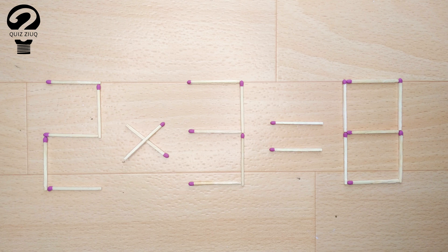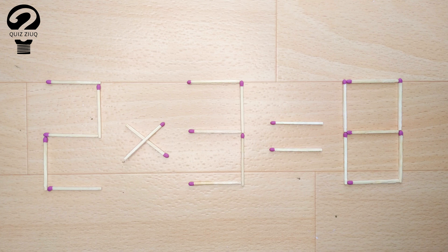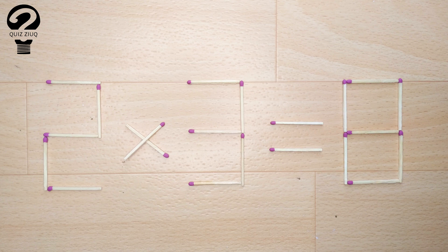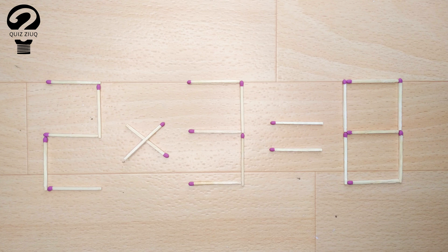This is a fairly simple mathematical problem that both children and adults can easily solve. Those who think logically can easily solve this problem. We need to move two matches to make our equation correct.